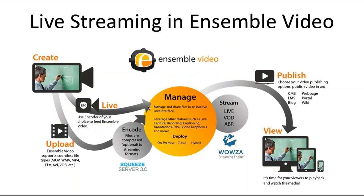Today we're going to be focusing on live streaming. There are many different flexible workflows that our customers are executing in Ensemble Video. We're going to start with creating content with different video cameras, and go through some live encoders. I'm going to give you examples of four live encoders: the Vidion Greylock, the Matrox Monarch HD, and two software encoders, Wirecast and Open Broadcaster. Those live encoders will connect to Ensemble Video, and videos will be delivered to webpages online, mobile devices, and computers.